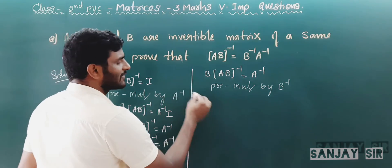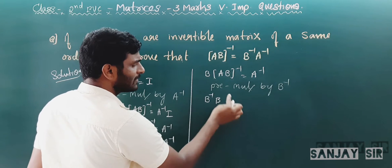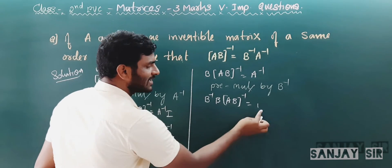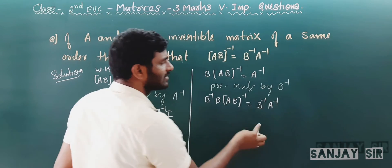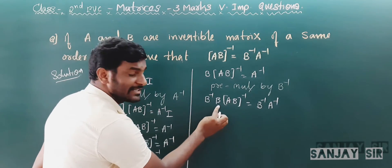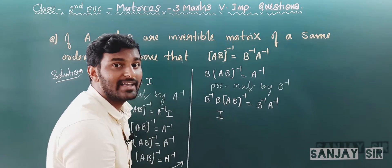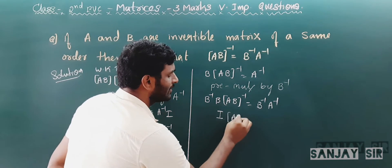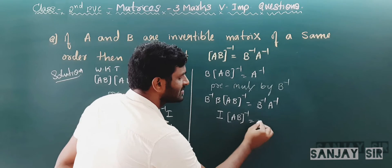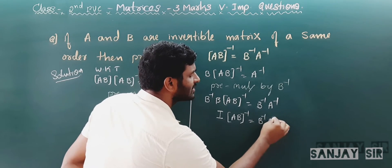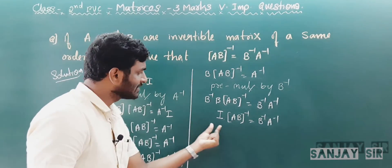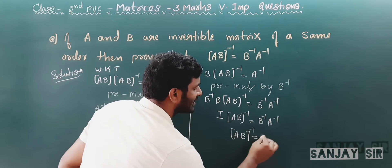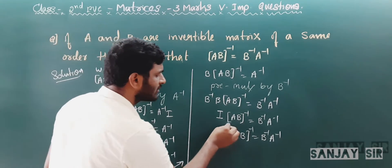Multiply B⁻¹ on the left-hand side. There is B⁻¹ · B, then (AB)⁻¹ as it is, equals B⁻¹ · A⁻¹. What is B⁻¹ · B? That is I. So I · (AB)⁻¹ = B⁻¹ · A⁻¹. What is I · (AB)⁻¹? Absolutely it is (AB)⁻¹. Therefore (AB)⁻¹ = B⁻¹ · A⁻¹. Hence we got this answer.